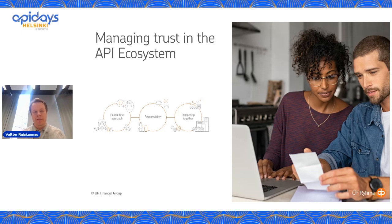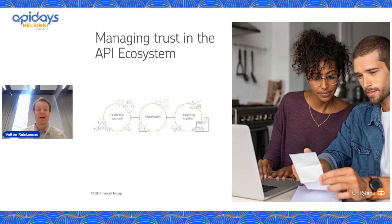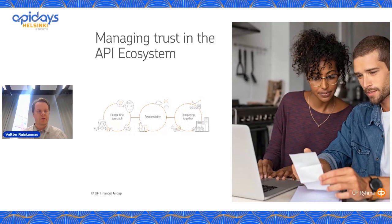We could think of OP as already being an ecosystem of its own. Our three core values are: people first — which resonates with me as a developer-first approach — making business responsible, meaning taking care of the API management and service infrastructure in a responsible way, and finally, prospering together, meaning managing the API ecosystem efficiently.